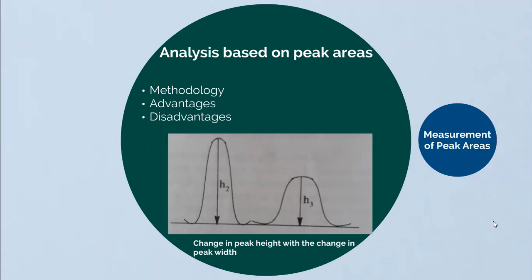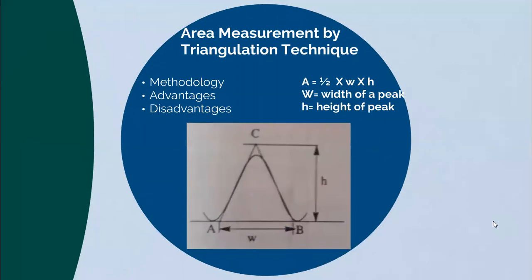Advantage: the measurement of peak area is independent of band broadening and hence offers the advantage of reproducibility. This is because if a band is sharp, its height is increased, and if the same band is broadened, its height is reduced, as you can observe in the figure. Peak area measurement is also the preferred parameter for asymmetric or skewed peaks. Disadvantage: the measurement of peak areas is not as easy as the measurement of peak heights; the area determination is carried out either by performing calculation from height and width of the peak, or by using some special device.